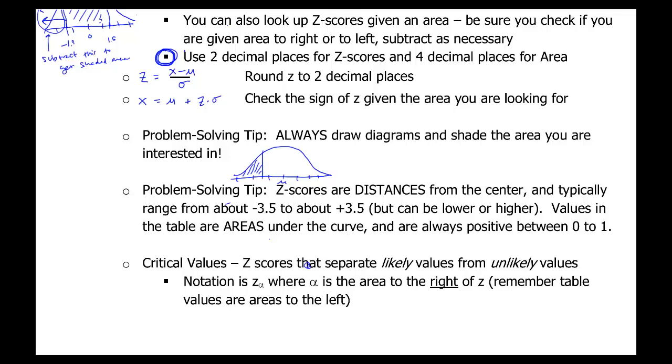Another tip, Z scores, remember, are distances away from the center or the mean. Typically, Z scores will be between about negative 3 to positive 3, but they can be lower or higher. You might get a value of Z as negative 10. You shouldn't assume that you made a mistake. You just assume that whatever you're calculating has a very low probability. For areas, areas are always between 0 and 1. Z scores can be negative or positive. Typically, not very large numbers, but they can be. And areas are always positive in between 0 and 1.